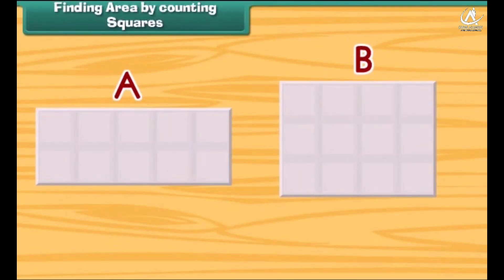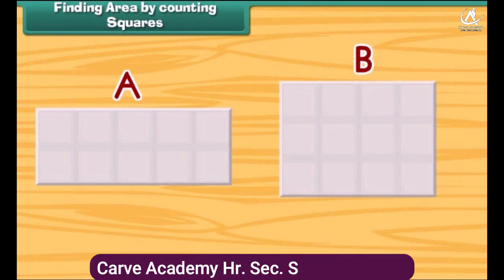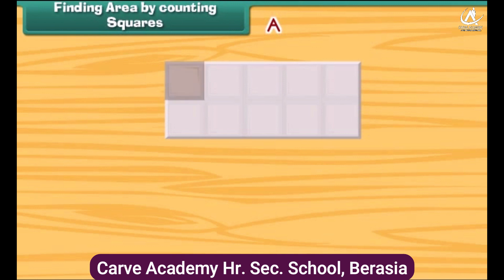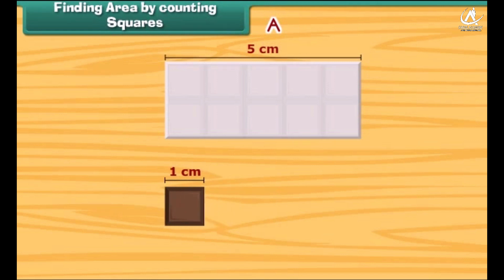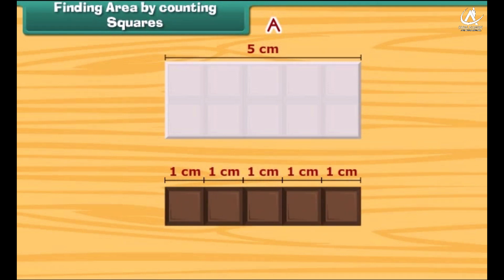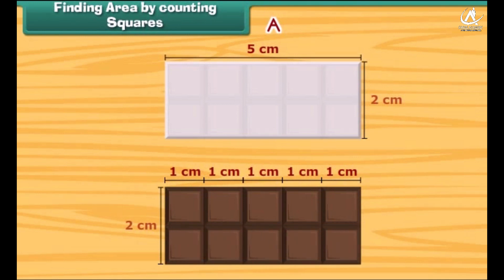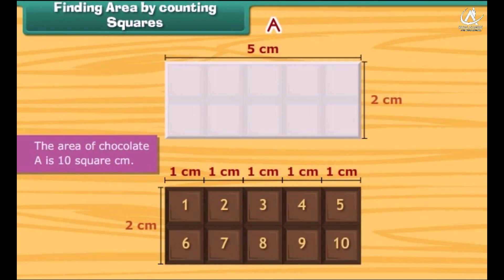Friends, we have these two chocolates. Let us find out which one is bigger and which one is smaller. We will take the help of one square piece of chocolate of side one centimeter. The length of chocolate A is five centimeters, so five squares can be arranged along its length. The width of this chocolate is two centimeters, so two squares can be arranged along its width. Thus, in total, ten squares can be arranged on it.